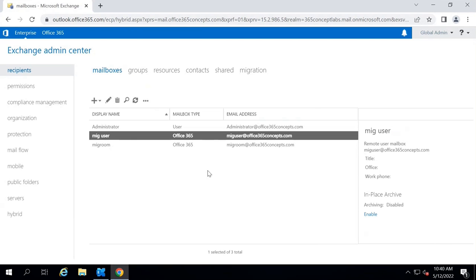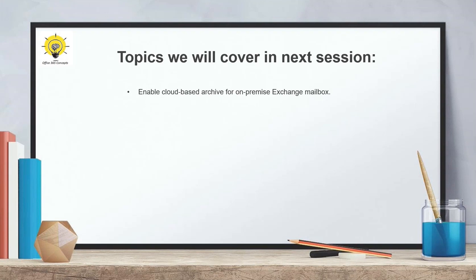This is how you perform a mailbox move or remote move in Exchange Hybrid deployment. In the next video, we will enable online archive or cloud-based archive for an on-premise mailbox in Exchange Hybrid deployment — covering the requirements and the entire process step by step. That is all for now. Thank you guys, take care.